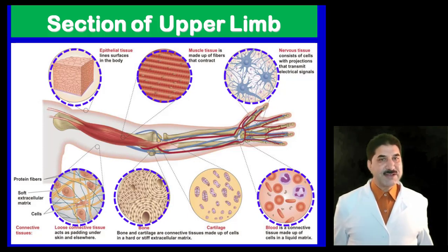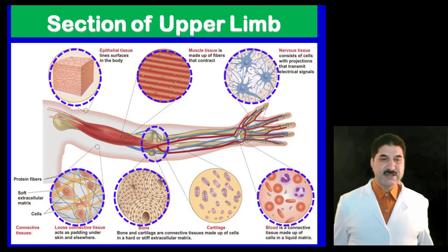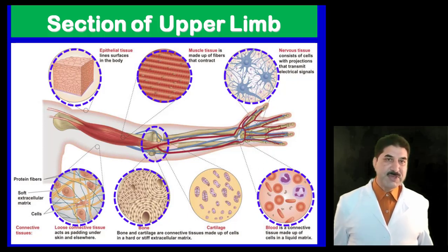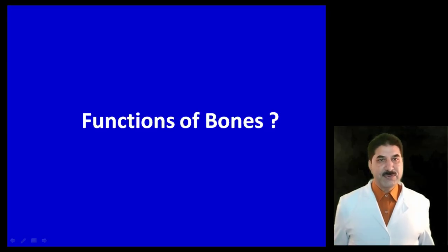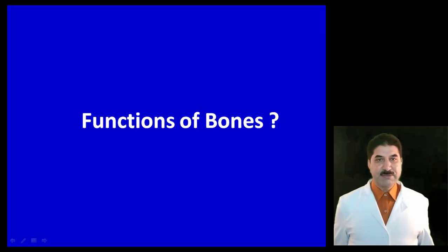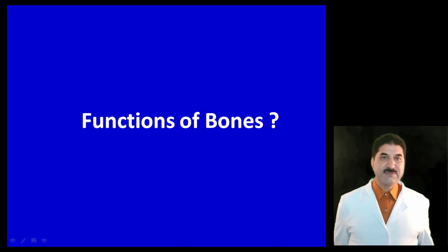The bone is a dense connective tissue. These bones join with each other to form a joint. Muscles are attached to the bones and are innervated by nerves which make them contract. In total, there are four basic tissues of our body: epithelial tissue, which covers the surface; connective tissue, which connects different tissues; muscular tissue, which contracts; and nervous tissue, which makes muscular tissue contract.